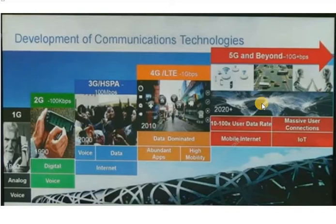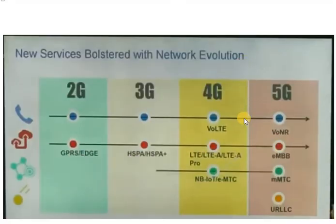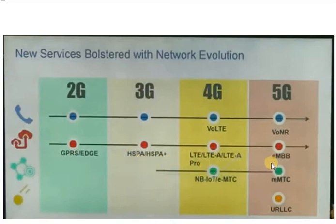We also saw that in the evolution to 3G, 4G, and 5G, different technologies contributed to higher data connectivity. In case of 2G we had GPRS and EDGE; in case of 3G we saw HSPA and HSPA+ and so on. Today we will be looking at mobile networks architecture evolution from a slightly different perspective.